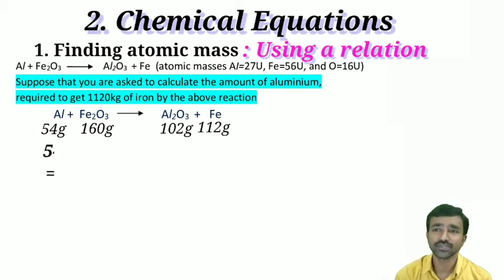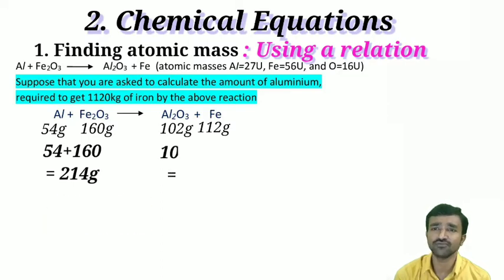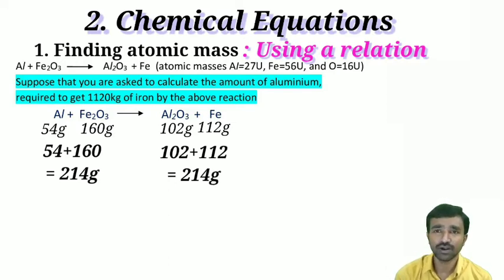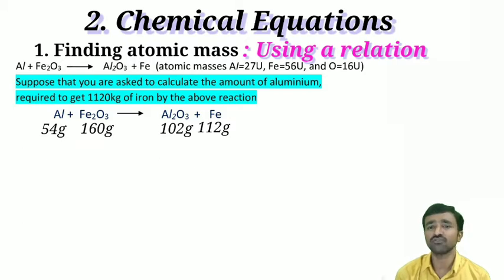Now verify: left side total is 54 + 160 = 214 grams; right side total is 102 + 112 = 214 grams. Before and after the reaction the masses remain the same, according to the law of conservation of mass. Always verify this before solving — without verification, your solution may give wrong information.